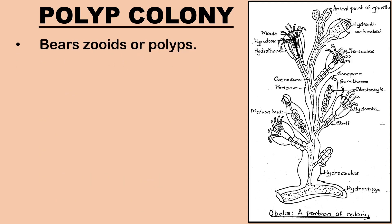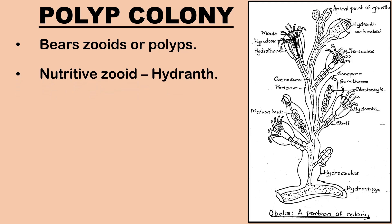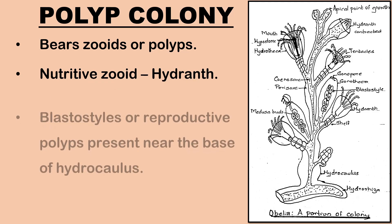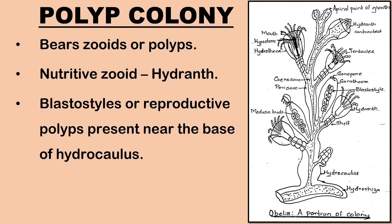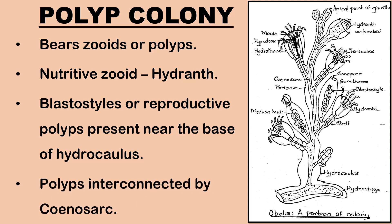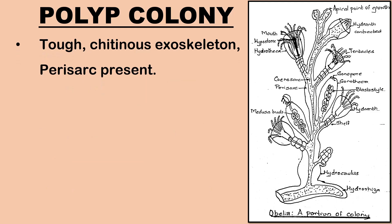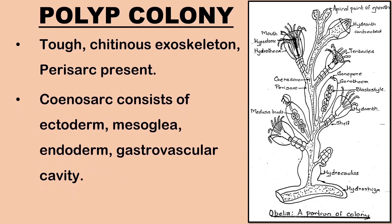The hydrocaulus bears zoids or polyps on either side. The ultimate branch terminates in a nutritive zoid called the hydranth. Reproductive polyps called blastostyles are present near the base of the hydrocaulus in the axis of the polyps. The polyps are interconnected by a tubular structure called the coenosarc and are protected by a tough chitinous exoskeleton called the perisarc. The coenosarc consists of the ectoderm, mesoglia and endoderm, through which a continuous gastrovascular cavity runs.